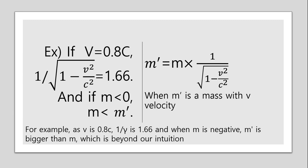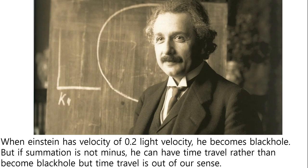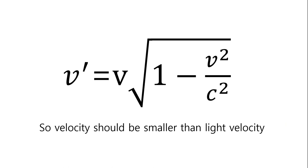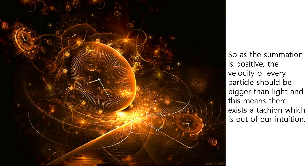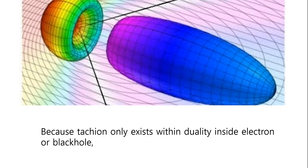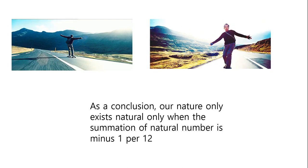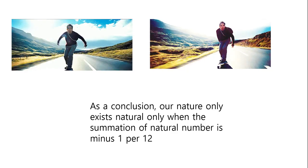For example, as v is 0.8c, 1 over gamma is 1.66. And when M is negative, M prime is bigger than M, which is beyond our intuition. When Einstein has a velocity of 0.2 light velocity, he becomes a black hole, but if the summation is not minus, he can have time travel later and then become a black hole — but time travel is out of our sense. So velocity should be smaller than light velocity. As the summation is positive, the velocity of every particle should be bigger than light, which means there exists a tachyon — out of our intuition — because a tachyon only exists with duality inside an electron and black hole. As a conclusion, our nature only exists naturally when the summation of natural numbers is minus 1 over 12.